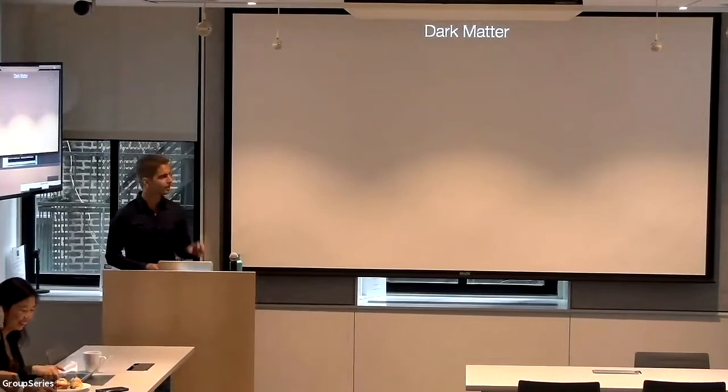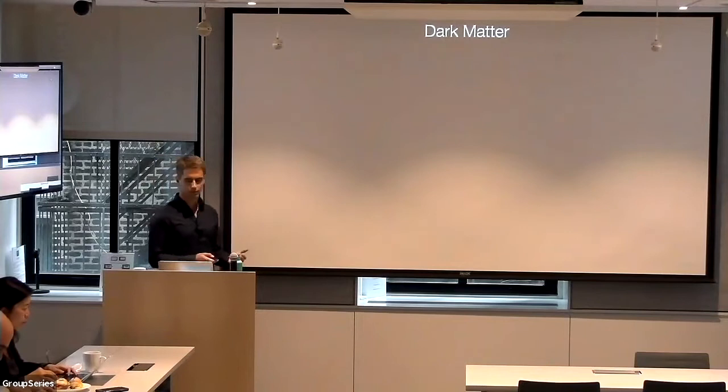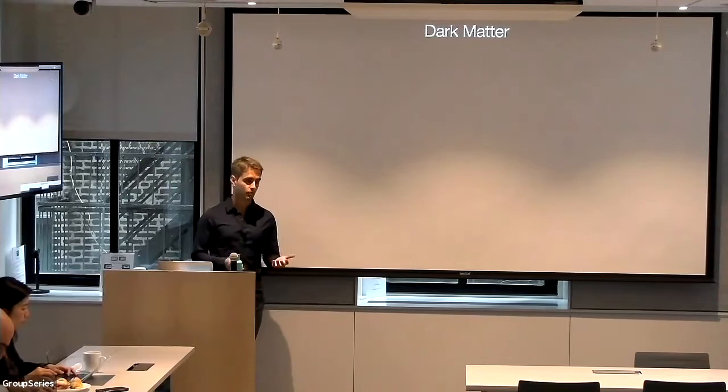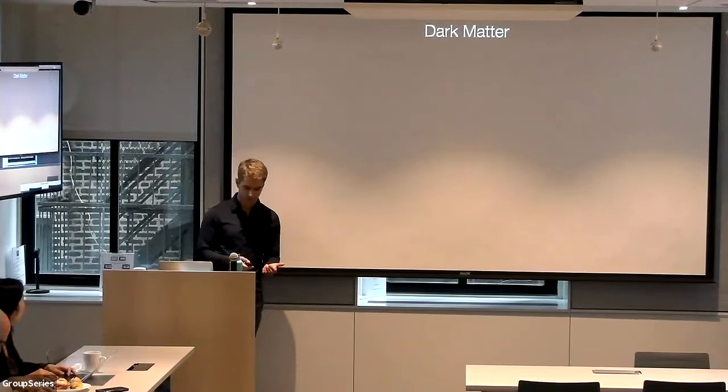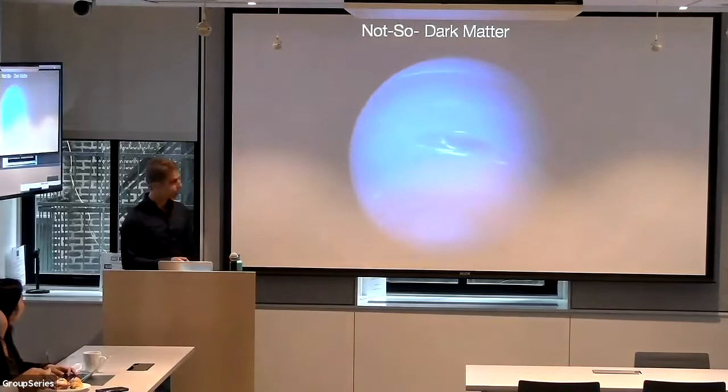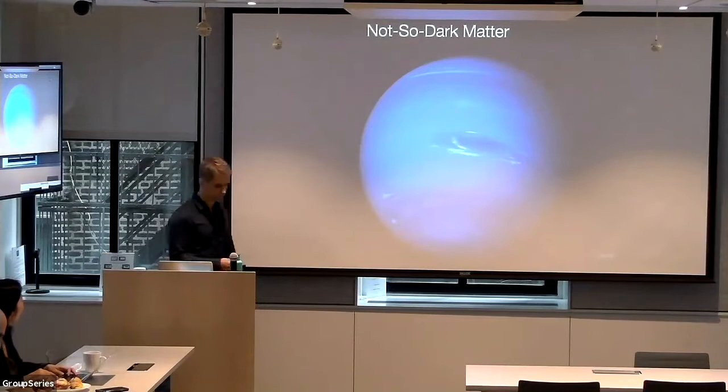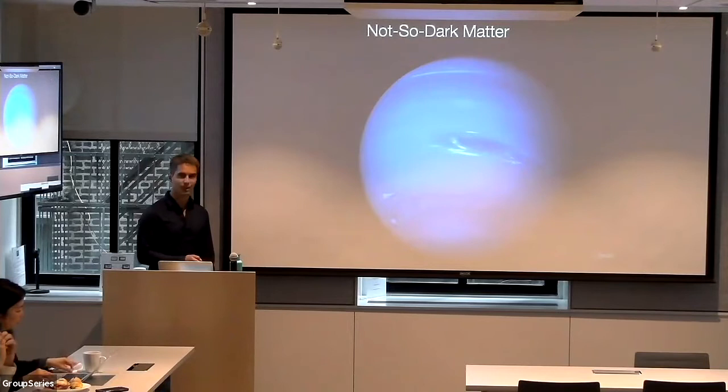I'm not going to show you a pie chart of dark matter, nor a picture of Fritz Zwicky or Vera Rubin, because the first time we inferred the presence of a massive body from its gravitational influence occurred much earlier — in 1846, when Urbain Le Verrier predicted the position of a new planet we later found out to be Neptune, which was of course not so dark. I'll get back to planets later in the talk.